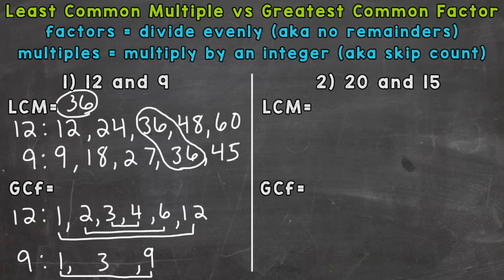So once we have those lists of factors, we find the greatest one that both those lists share, what they have in common. So we can see that they have 1 in common, but we want the greatest. So anything greater? Yes, 3. So 3 is going to be the greatest common factor between 12 and 9.